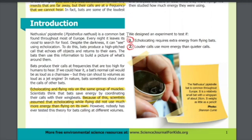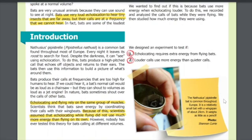We designed an experiment to test if one: echolocating requires extra energy from flying bats, and two: louder calls use more energy than quieter calls. In the image in the bottom corner, we can see the Nathusius' pipistrelle bat is common throughout Europe. It is a relatively small bat with the wingspan of about 20 centimeters. It weighs as little as a pencil.